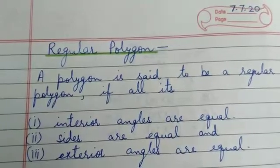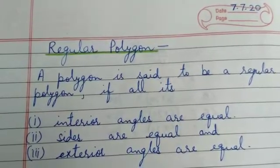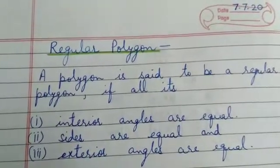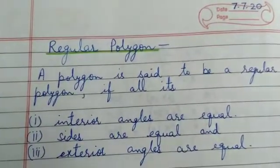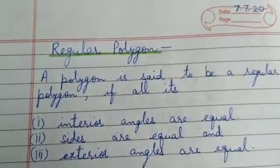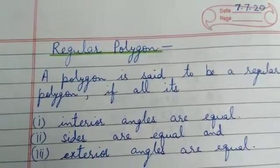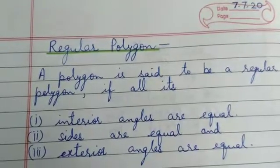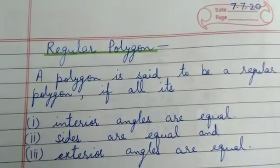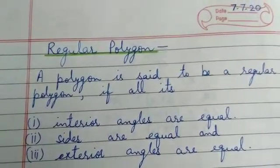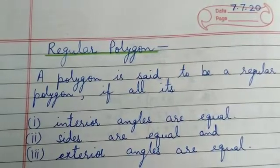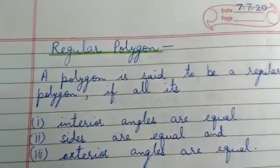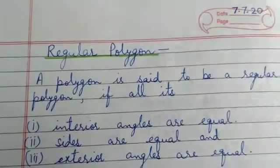Similarly, a square is a bounded figure with four line segments where all four sides are equal and each interior angle is equal to 90 degrees. So equilateral triangle is a regular polygon and square is also a regular polygon.